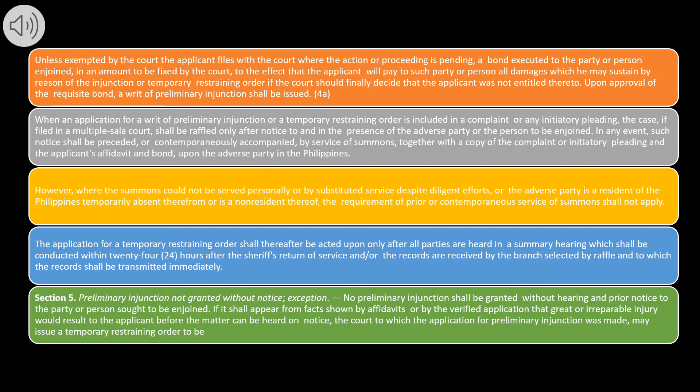When an application for a writ of preliminary injunction or a temporary restraining order is included in a complaint or any initiatory pleading, the case, if filed in a multiple sala court, shall be raffled only after notice to and in the presence of the adverse party or the person to be enjoined. In any event, such notice shall be preceded, or contemporaneously accompanied, by service of summons, together with a copy of the complaint or initiatory pleading and the applicant's affidavit and bond, upon the adverse party in the Philippines.